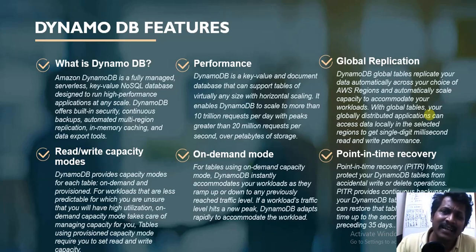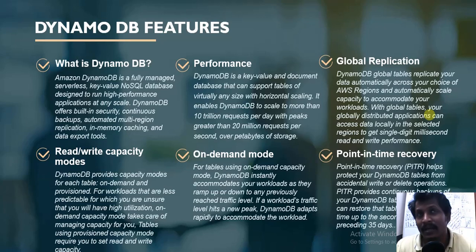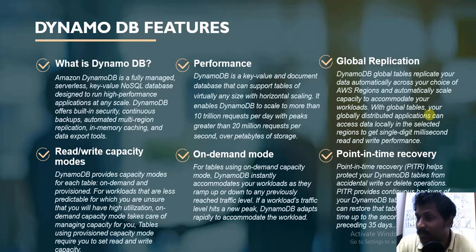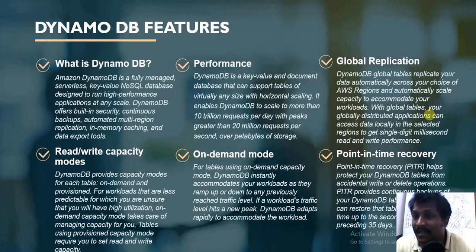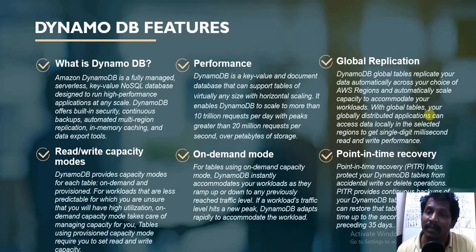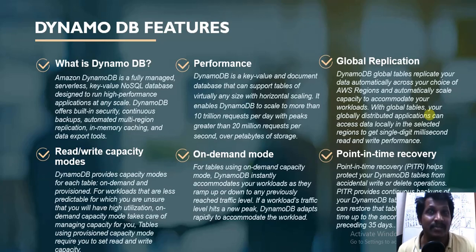The next key feature is global replication. Every enterprise-grade application requires data to be replicated across various regions and data centers. AWS provides this with global tables — you can replicate your DynamoDB tables across AWS regions depending on your business requirements. It promises single-digit millisecond read and write performance no matter which AWS region you're in, even with data distributed globally.